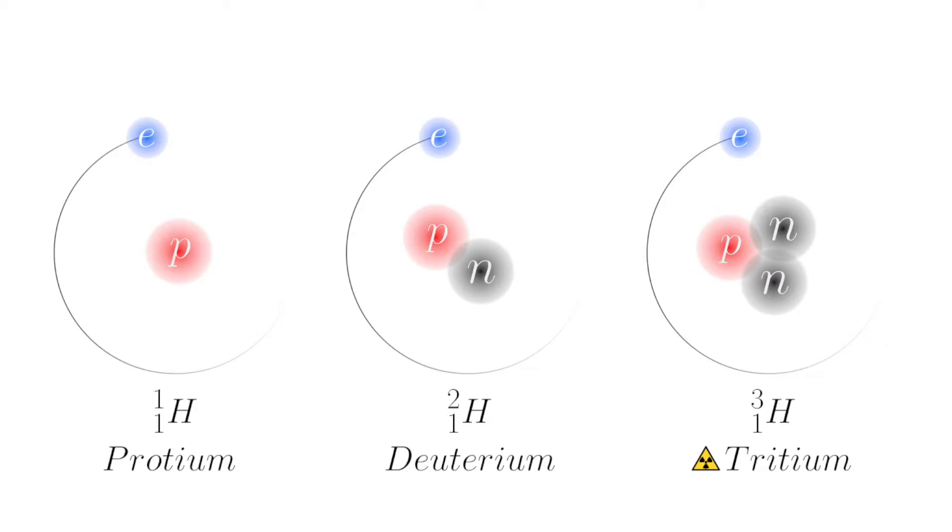Its atomic nucleus is formed by one proton and contains no neutrons. Besides protium, there are the isotopes deuterium and tritium. The nucleus of deuterium contains a proton and a neutron. The nucleus of tritium contains one proton and two neutrons.